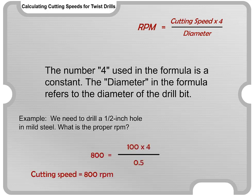Here is an example. We need to drill a one-half inch hole in mild steel. What is the proper RPM? Watch how the formula is filled out.